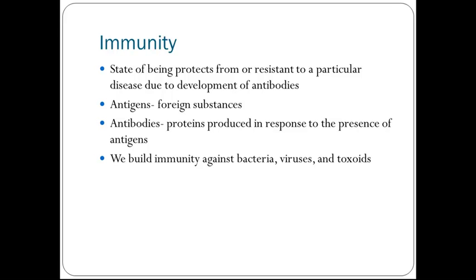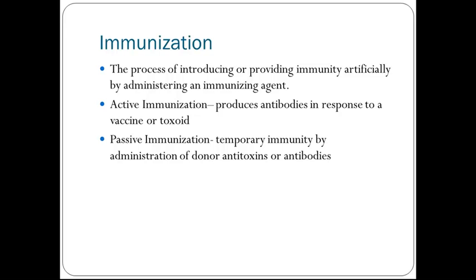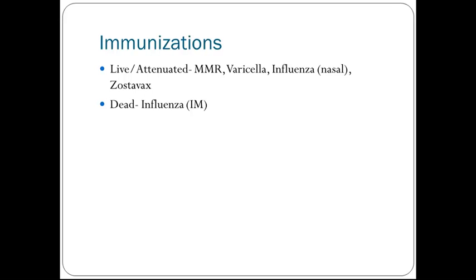Some good examples are our tetanus and diphtheria vaccines. Immunization is a process of introducing or providing immunity artificially by administering an immunizing agent. Active immunization produces antibodies in response to a vaccine or toxoids. Passive immunization is a temporary immunity by administration of donor antitoxins or antibodies. There are two different types of immunizations: live or attenuated, which would be our MMR, varicella, influenza nasal, or Zostavax; and the dead immunizations, for which influenza given intramuscularly is an example.